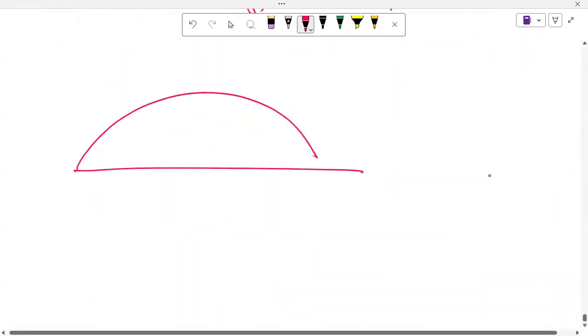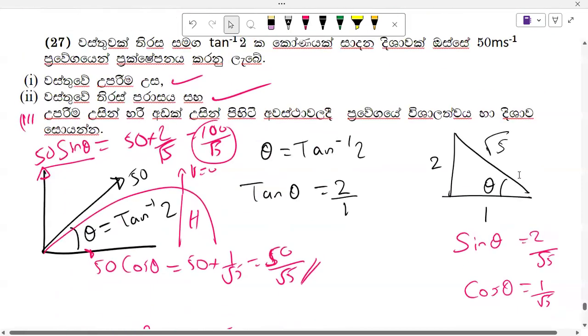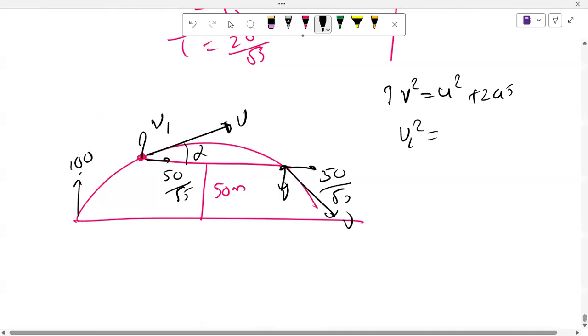Now we need to find the velocity. Looking at our equation, V equals the square root of V1 squared plus 50 over root 5 squared. This equals 1000 plus 2500. The velocity V equals 1000.